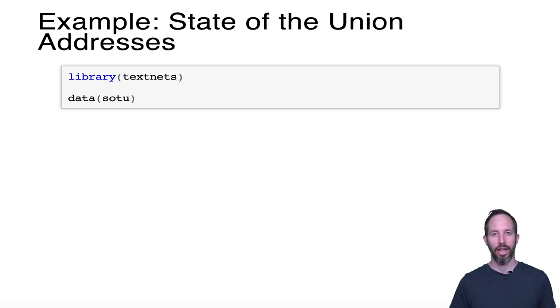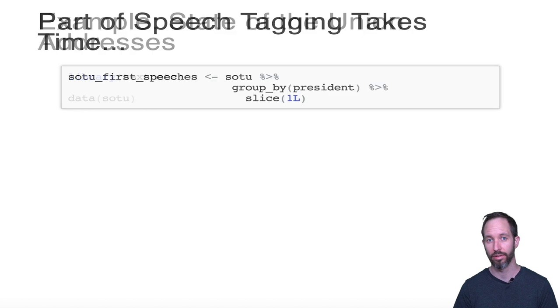So the textnets package comes with a dataset that is the State of the Union data, the same data that we were just looking at in the Rule et al paper. So you can load the package and then load the dataset using the data function, and then if you want to browse that you could use the view function to take a look at the data. Basically each line of the data has a president, a year, and then the full text of the speech.